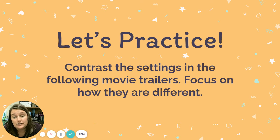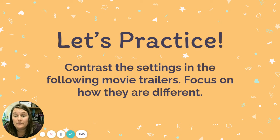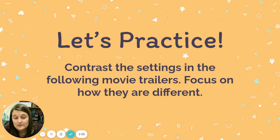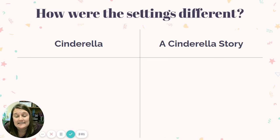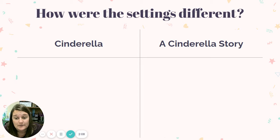We're going to practice. I'm actually going to post two videos underneath this one on Buzz. One will be a movie trailer for Disney's Cinderella, and the other will be one for A Cinderella Story. I want you to watch both, make a t-chart, and really think about the differences between those videos. So pause this and go open those and look for those differences. You're going to want to make a t-chart with Cinderella on one side and A Cinderella Story on the other. Our focus today is the differences.